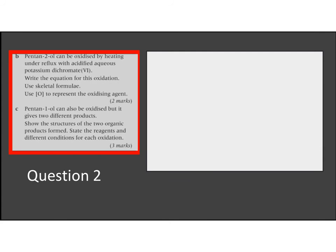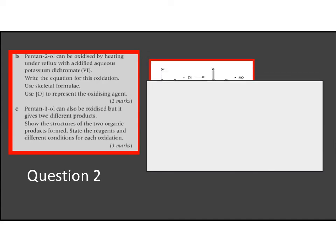So finally, question two, which is talking about pentan-2-ol being oxidized. So pentan-2-ol is of course a secondary alcohol. It wants us to use skeletal formula for this. So if it's a secondary, it can only go to a ketone, which means we add one square bracket O to represent the oxidizing agent and we produce water. Pentan-1 however can be oxidized to two different products.